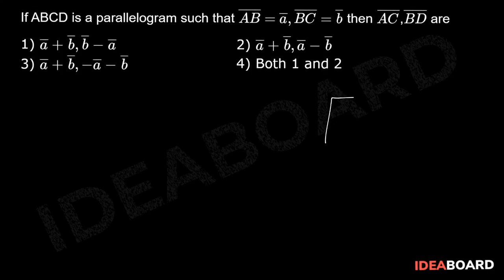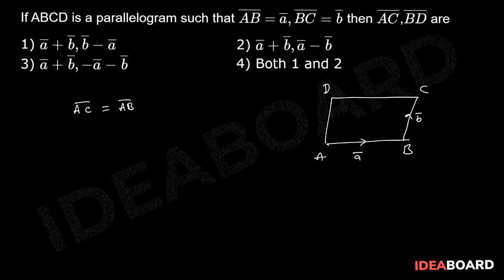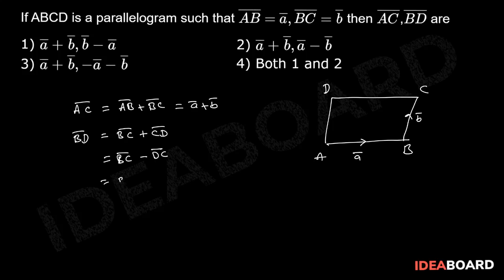Here ABCD is a parallelogram. AB bar equals vector a and BC bar equals vector b are given. Using the triangle law, AC bar — that is the diagonal — equals AB bar plus BC bar, which equals vector a plus vector b. And BD bar equals BC bar plus CD bar. Since CD bar equals minus DC bar and DC bar equals AB bar, we get BD bar equals vector b minus vector a.